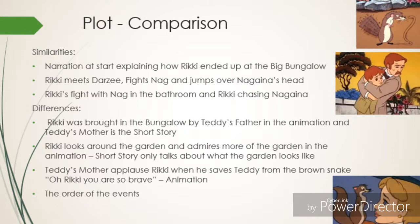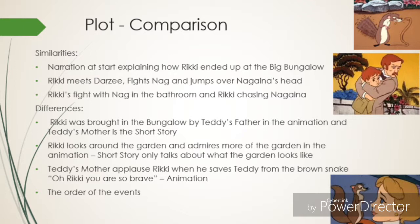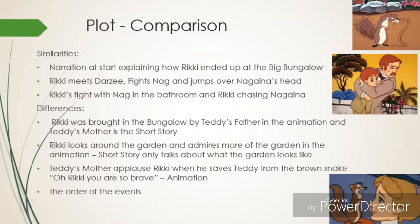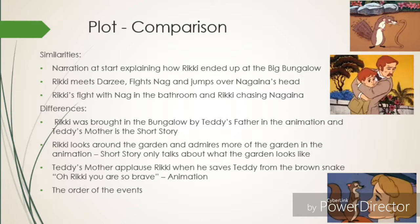This is because the story only really talked about how the garden looked like. He then finds Darzee, the tailorbird, who was mournful as Nag and Nagaina took his eggs. Rikki soon fought Nag and Nagaina and jumped over Nagaina's head when she strikes, in both versions. Another difference is when Teddy's mother applauded Rikki in the animation as he saved Teddy from a brown snake. However, in the short story, they did not applaud him, except they gave him treats.